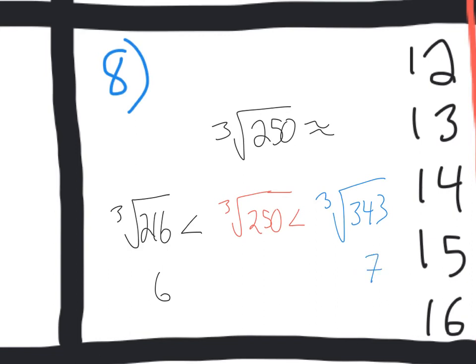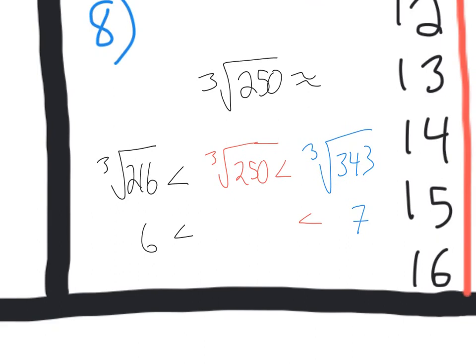So that means this answer right here is going to be in between 6 and 7, if we had to estimate it really closely. But they just want us to find the nearest integer. And since 250 is closest to 216, we can say that this is approximately 6.